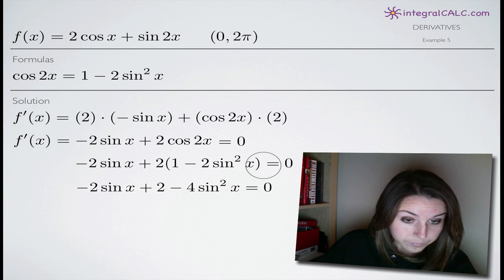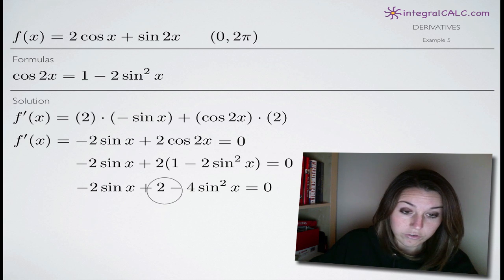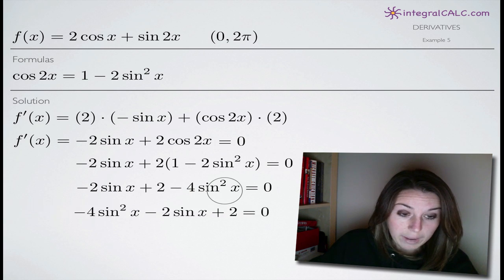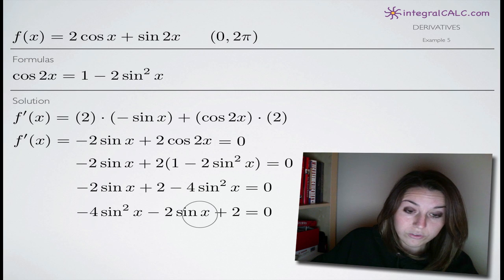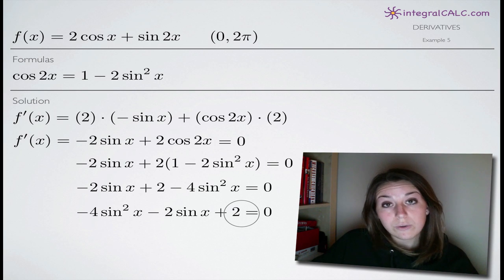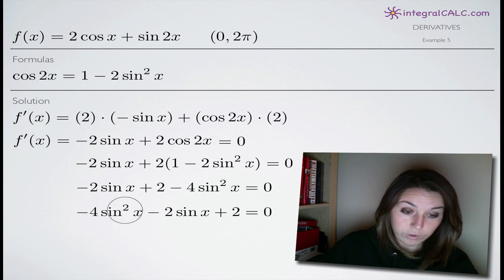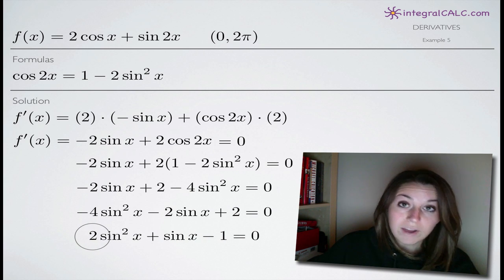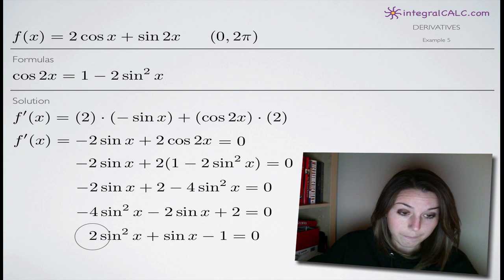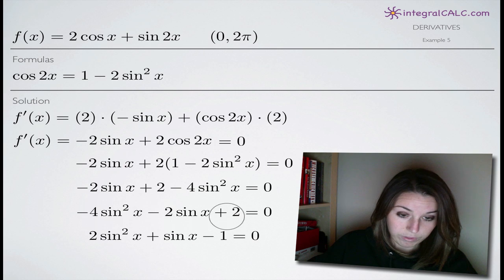So I make that substitution. And now I'm going to go ahead and distribute this 2, multiplying it by 1 minus 2 sine squared of x. Then I'm going to rearrange my terms, bringing the 4 sine squared of x out in front. The 2 sine of x will come next and then the 2 is a constant. I'm going to try to factor this, and that's why I want to have my squared term out in front and the constant here at the end. So I rearrange the terms and then I'm going to divide both sides of this equation by negative 2. I end up with a coefficient of 2 on the first term, 1 on the sine of x term, and negative 1 for a constant, dividing through the entire thing by negative 2.